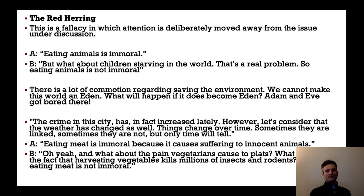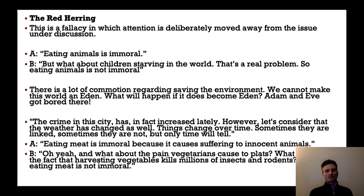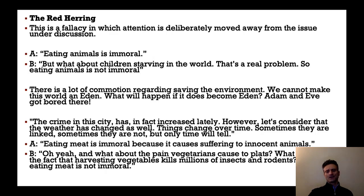The next fallacy is the red herring — committed when you try to move the target away from the discussion. I say eating animals is immoral and give you reasons why, and you respond: 'But what about children starving in the world — that's a real problem.' You are introducing a new topic, moving away from the original argument. That is the red herring fallacy.